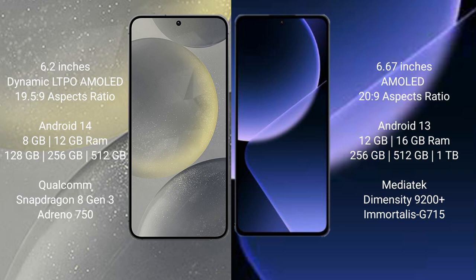Samsung Galaxy S24 runs on the Android 14 operating system. It comes with 8GB or 12GB RAM, with 128GB or 256GB internal storage options. It features a Qualcomm Snapdragon 8 Gen 3 processor and Adreno 750 GPU.